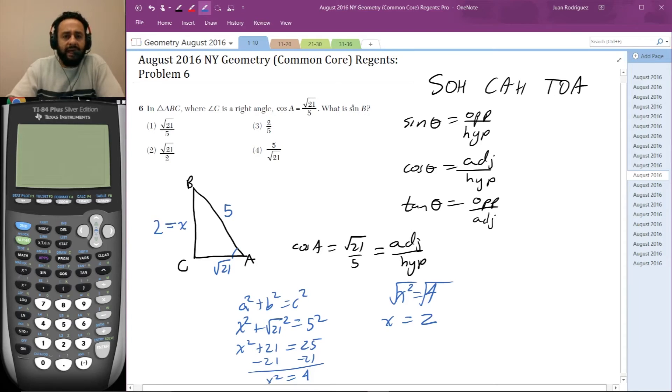So that makes sin B equal to opposite over hypotenuse. Sin B is opposite over hypotenuse, but a lot of that work was not actually relevant. Sin B equals opposite over hypotenuse, but opposite relative to B.